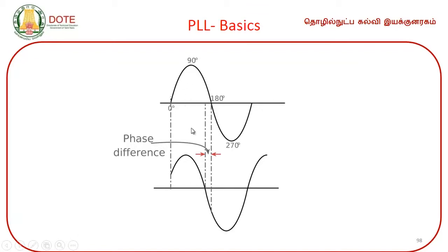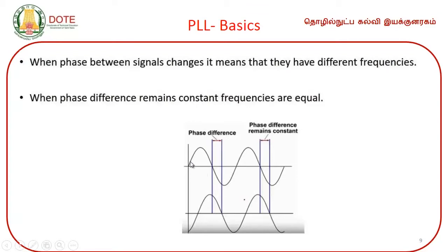Between these two waves there is an angular difference, so both are out of phase. Now, coming to frequency: how to check whether two signals are at the same frequency or different frequency? Let signal one have frequency F1 and signal two have frequency F2. How do we check whether F1 equals F2 or not?